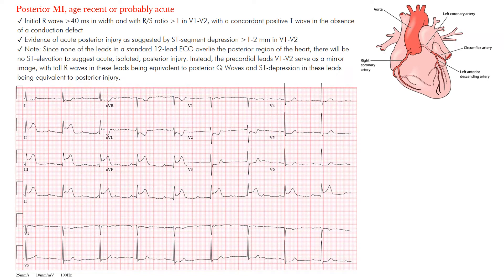We're looking at something in the acute setting, meaning we may actually have to intervene on the posterior MI. How are we going to identify this? First off, there are no posterior leads on the standard 12-lead EKG. The posterior leads that we can sometimes put on are V7 through V9, which are a continuation of the precordial leads V1 through V6.